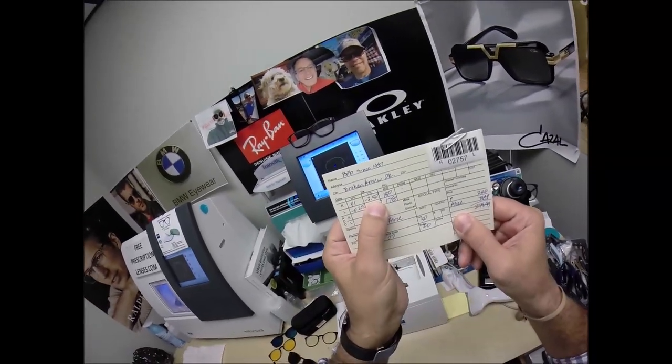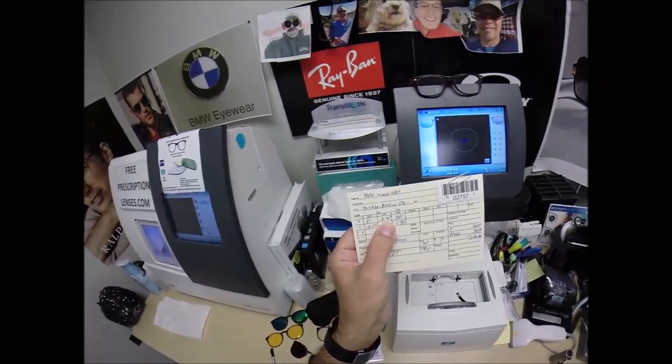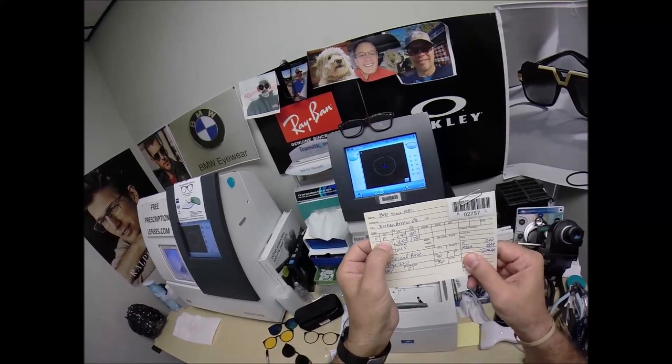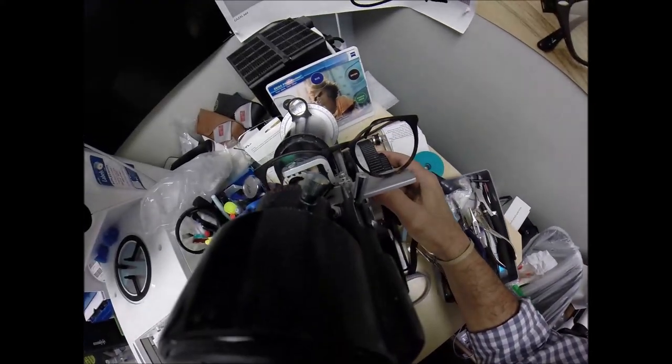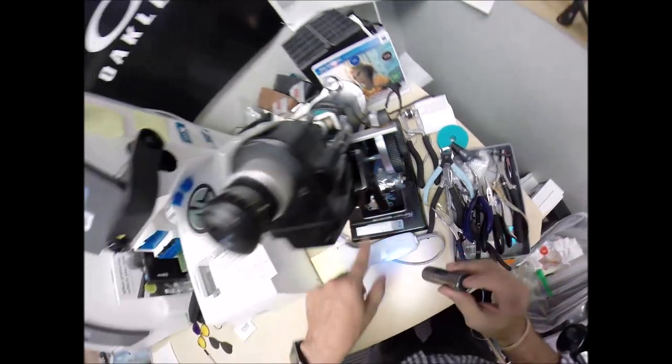So, you need no farsighted or nearsighted correction. Your prescription for the right eye is all astigmatic. So, as I mentioned earlier, uncorrected astigmatism makes sixes and eights look like the letters P and F. So, you need no magnification nor minification, but you do need 10 steps, two and a half diopters of astigmatic correction. And when we check that power, we have minus 250 exactly halfway between two and three.